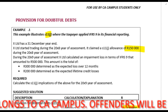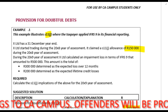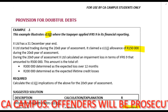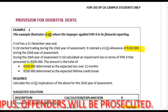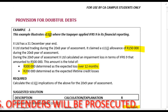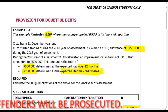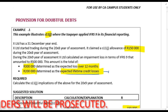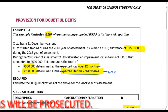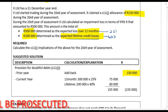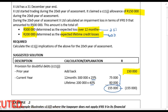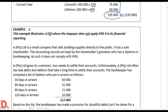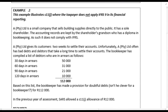X Limited calculates the impairment loss in terms of IFRS 9. The total impairment loss recognised in the financial statements is 500,000 rands, made up of 300,000 rands determined over 12 months and 200,000 rands determined over the lifetime. The 12-month amount is multiplied by 25% and the lifetime amount by 40%, giving us 300,000 × 25% plus 200,000 × 40% as our total section 11j allowance for this year.